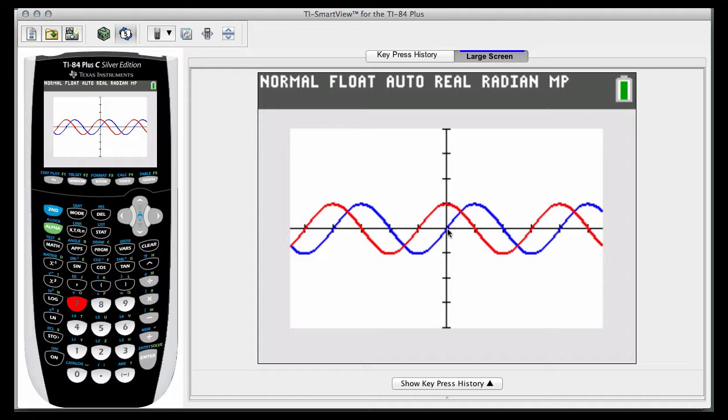Since this would be a dx problem, think again of the orientation of your rectangles, your representative rectangle. It would go vertically, so therefore it's a dx problem. Therefore our limits of integration have to be x values. So one limit of integration is going to be pi over 4.